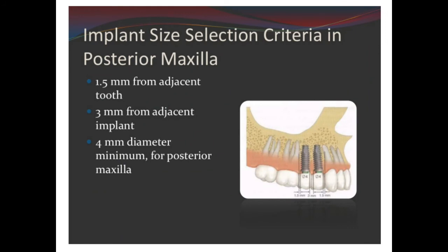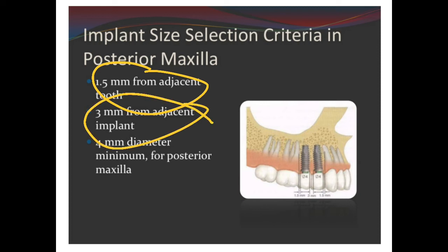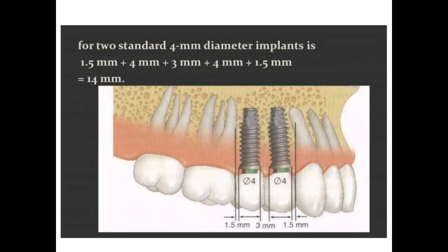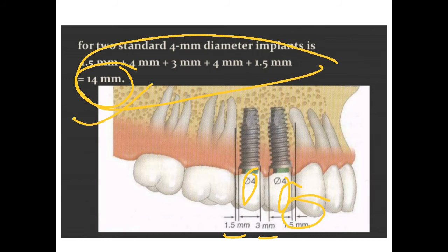There should be at least 1.5 mm of distance between the tooth and the implant, at least 3 mm of distance between implants, and a minimum 4 mm diameter for the posterior maxilla and mandible. So if you are planning two implants, you should have at least 14 mm of distance: 1.5 mm from the tooth, 3 mm between two implants, 4+4 mm for implant diameters, and 1.5 mm on the other side.